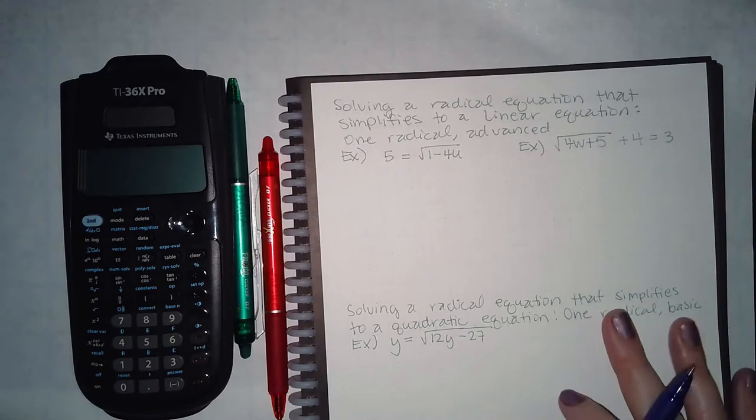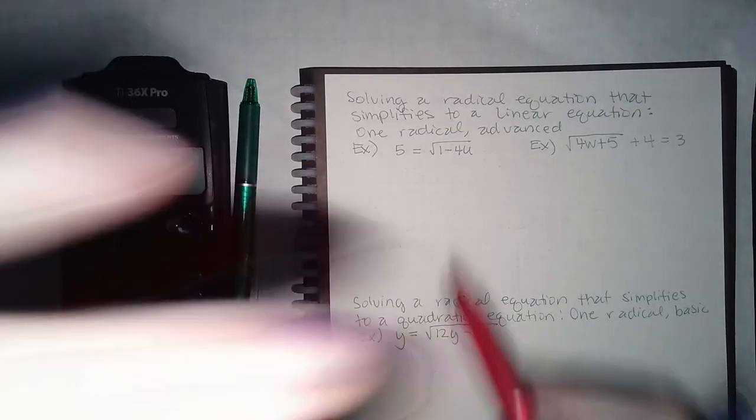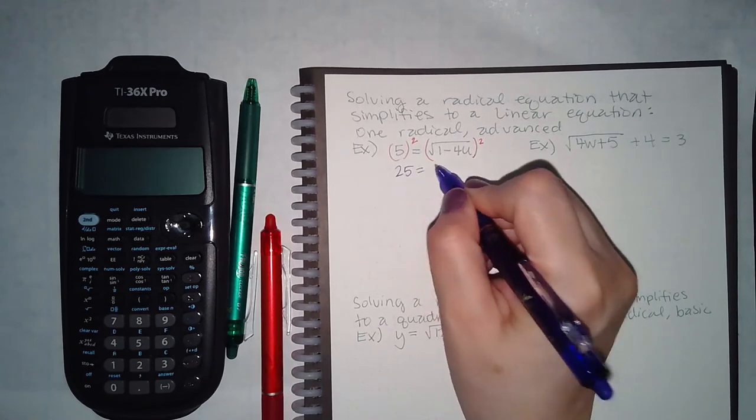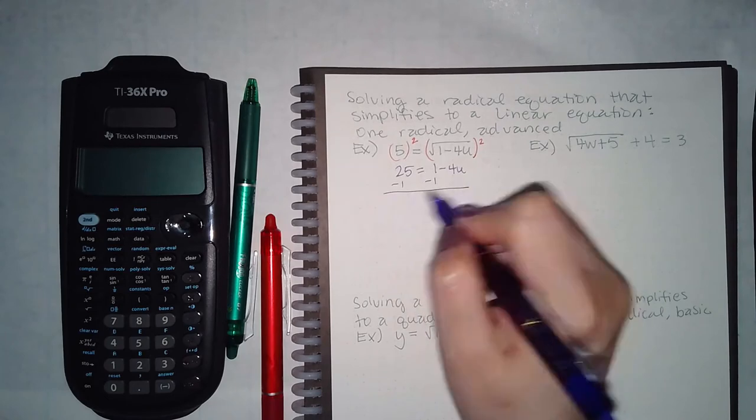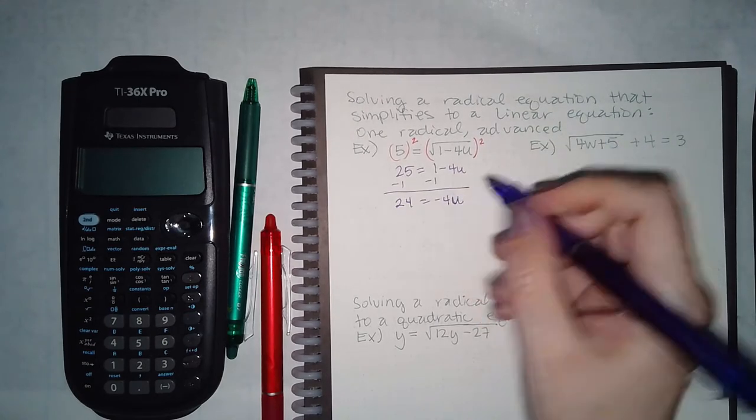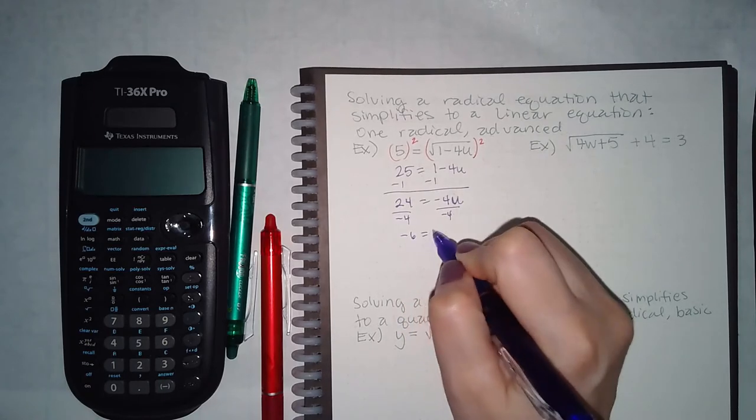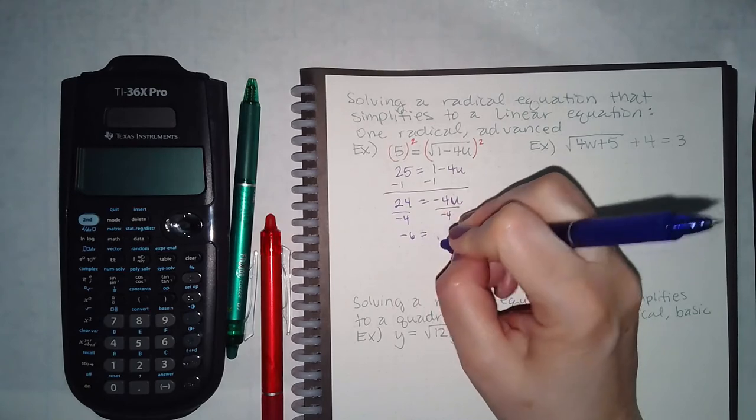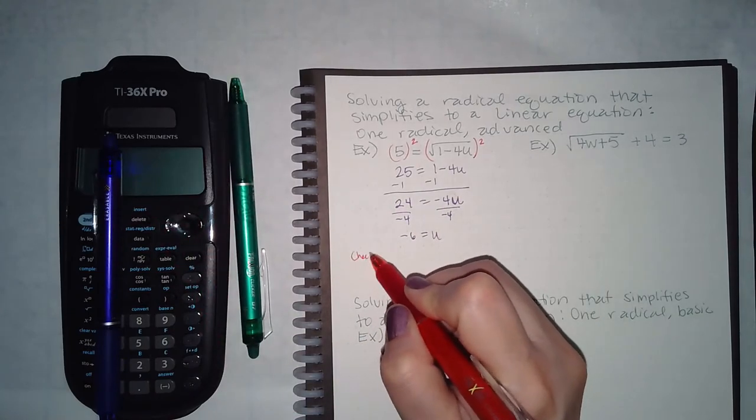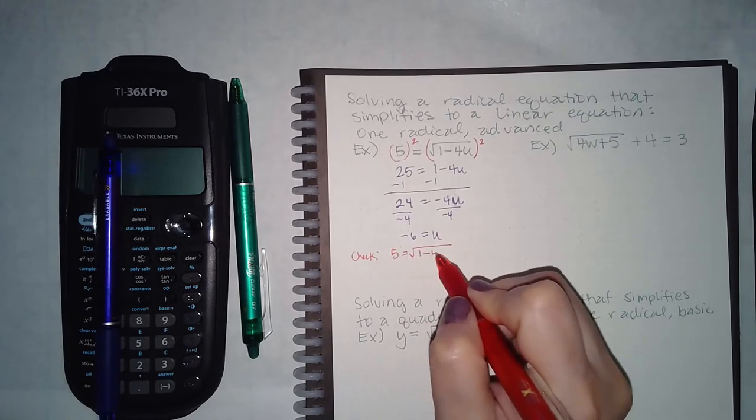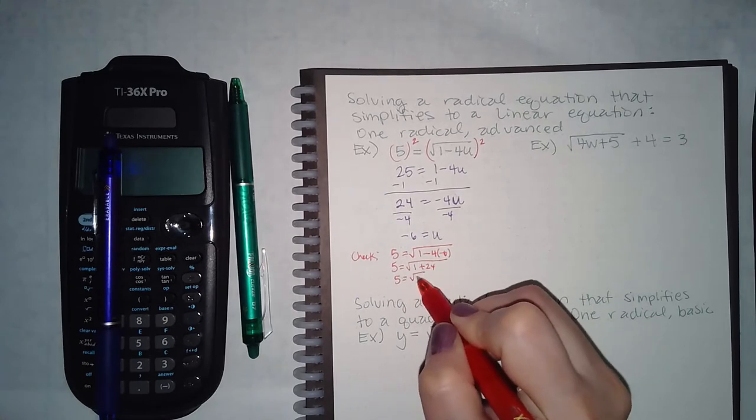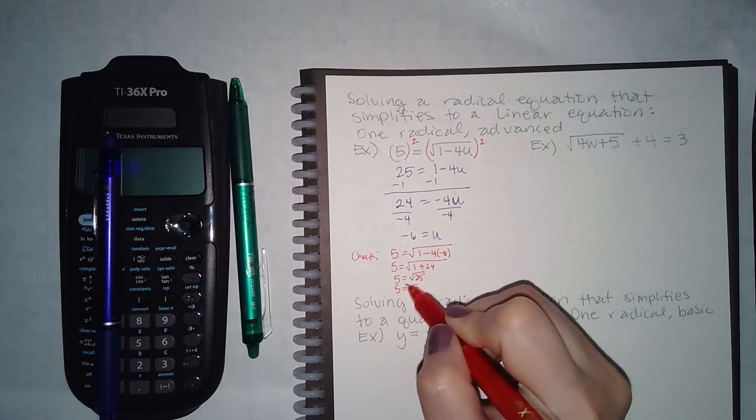Let's try another one. Same thing - this square root is already by itself, so I can just square both sides. I'll get 25 equals 1 minus 4u. Continuing to solve, I get u equals negative 6. Then let's plug that back in: 5 equals 1 minus 4 times negative 6, which is 1 plus 24. Square root of 25 with a positive root gives positive 5, and these are equivalent, so this is the answer.